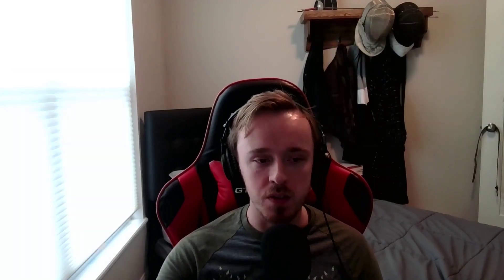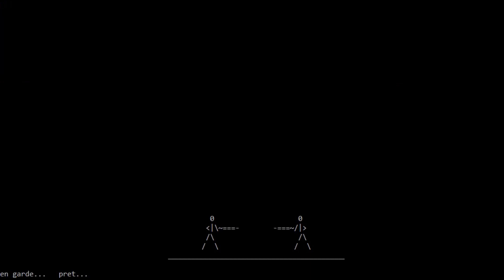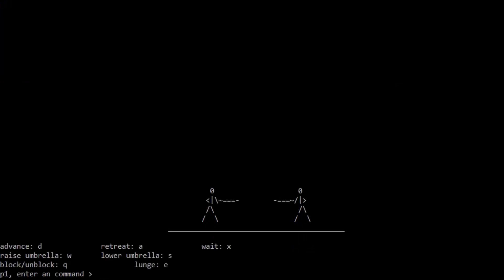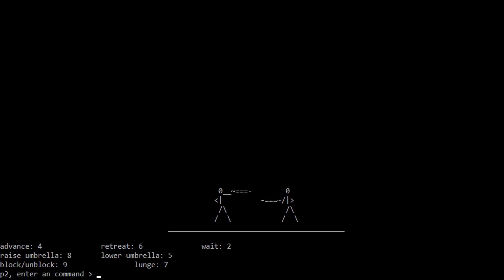Starting with graphics, without any fancy libraries, you can print to the terminal and actually make a text-based game entirely this way, or a text-based application, whatever you would want. It's very old-school, but you can do it just by sending data to the standard out stream. And I'm going to show you right here this little umbrella fencing game I made a while back — entirely made just by printing to the console.